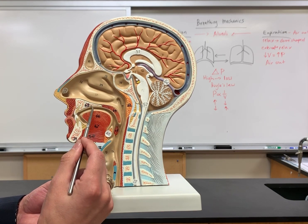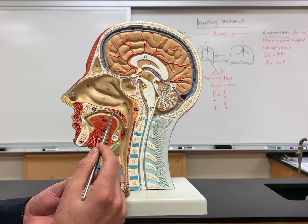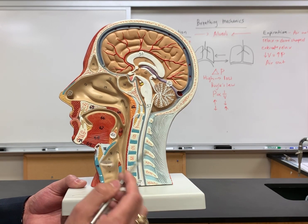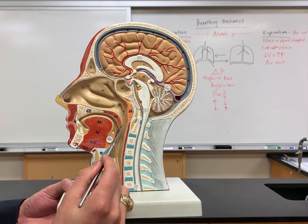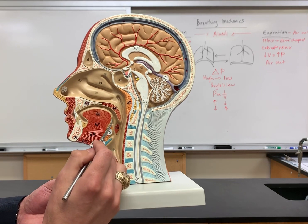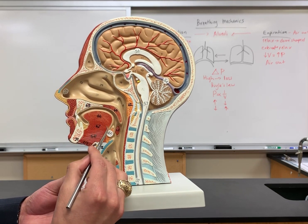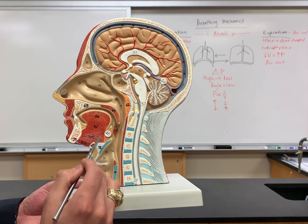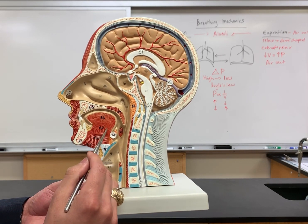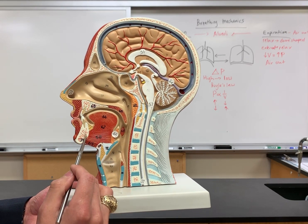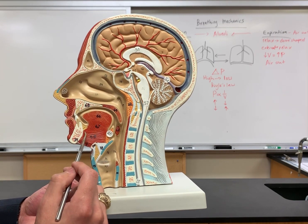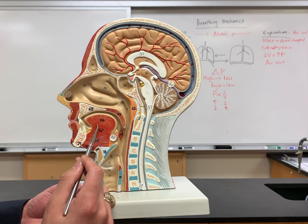Now we'll look at number 63, which is the hard palate, and then number 64, which is the soft palate. The uvula is the structure here on the back. Number 66 is where the tongue is. Number 67 is going from the chin — that's what 'genio' means — to the tongue, so this is the genioglossus muscle.